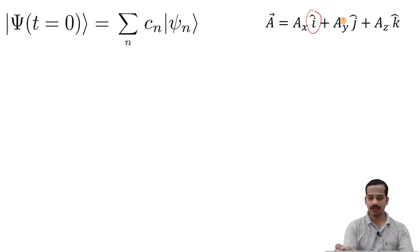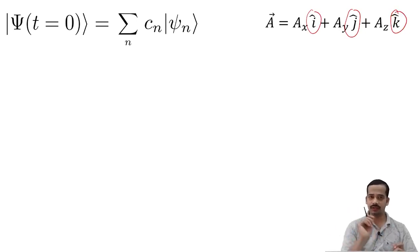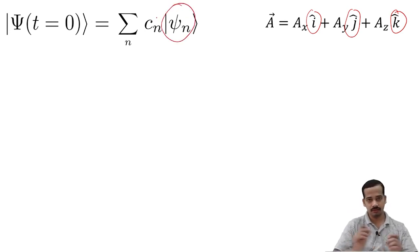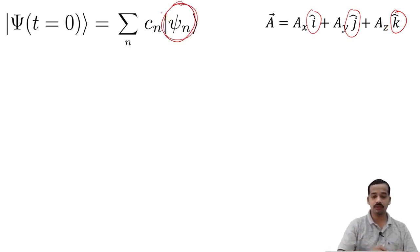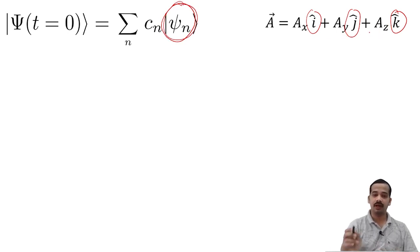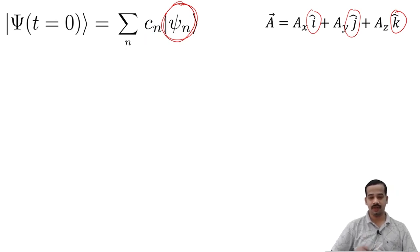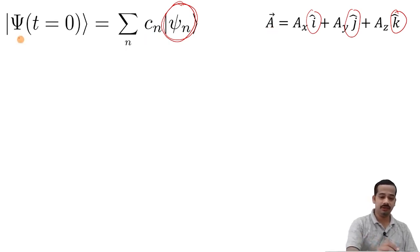Here, i-cap, j-cap, k-cap are unit vectors with unit length — they are normalized, similar to how psi-n are normalized. Also, i-cap, j-cap, k-cap are orthogonal to each other, and similarly psi-n are orthogonal to each other. The components A-x, A-y, A-z are very similar to the coefficients C-n, or C-1, C-2, C-3, and so on. And the vector A is similar to psi at t equal to 0. You can find a lot of analogy between these two.